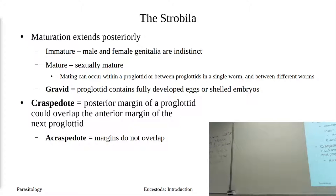After mating, you have egg development. As eggs mature and get stored in the uterus, you typically see degeneration of the genitalia until you get a proglotid basically filled with eggs. That is called a gravid proglotid — a proglotid that is completely full of eggs.